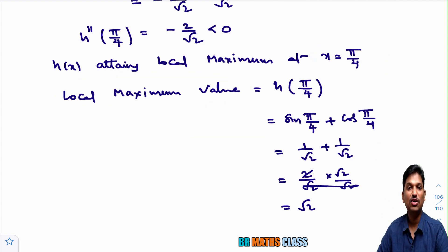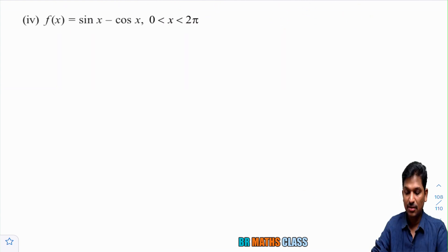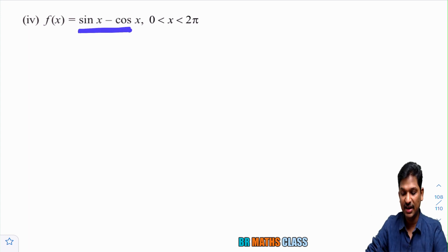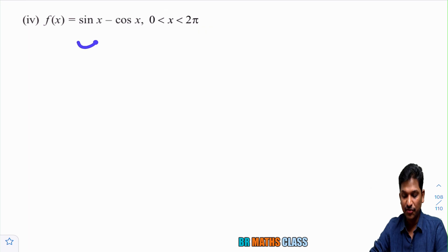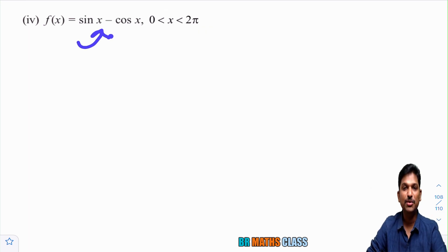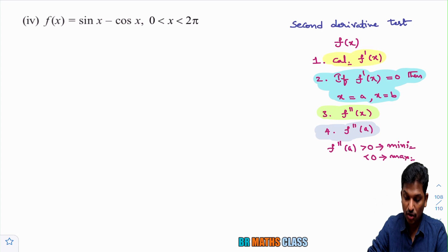Now we move to the next question. The function given is f(x) = sin x − cos x, and x is in the interval 0 to 2π (0 to 360 degrees), meaning from the first quadrant to the fourth quadrant. We need to find where this function attains local maximum and local minimum, and what those values are. We will use the second derivative test.